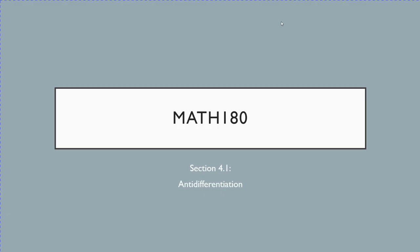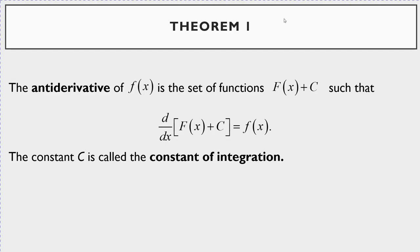Hi class. In this lecture we want to move into chapter 4 of our textbooks, looking at section 4.1. This is called anti-differentiation. We know what differentiation is — we know how to find derivatives. The concept of anti-differentiation is to undo the derivative. So what is the anti-derivative? Think of the anti-derivative for now as undoing the derivative.